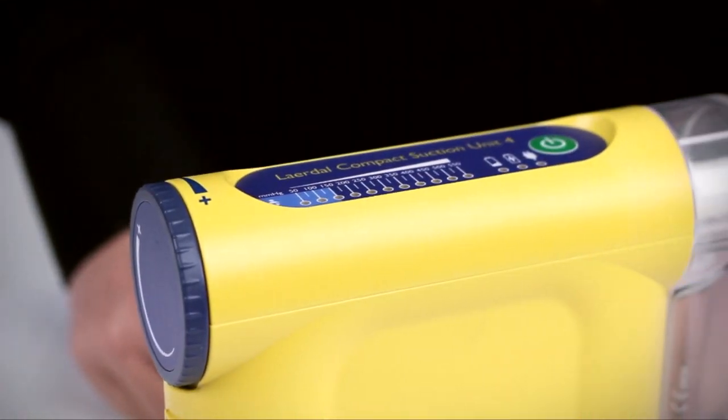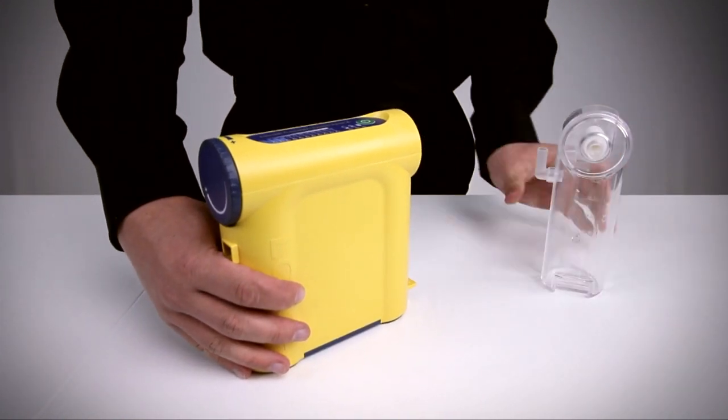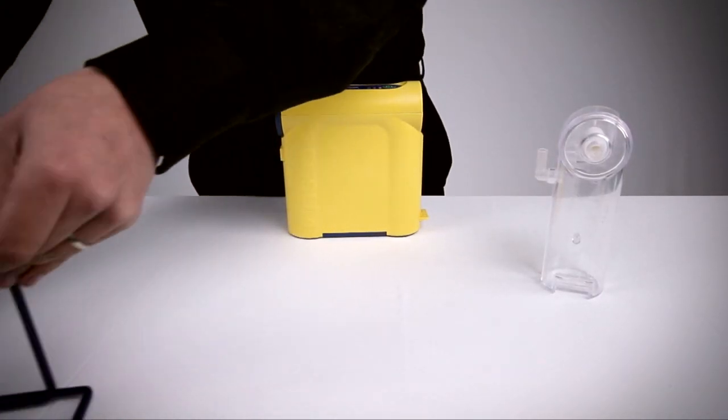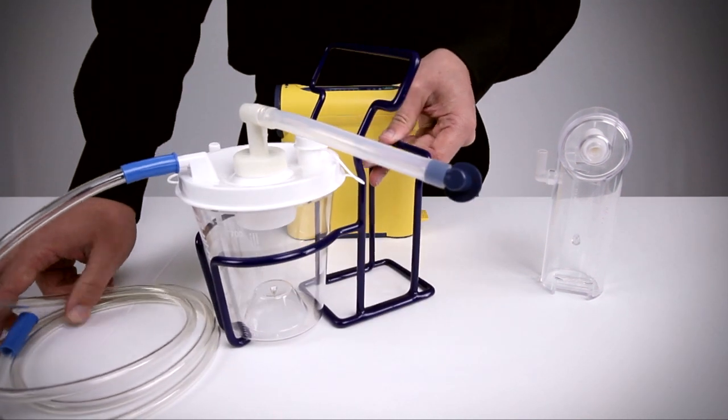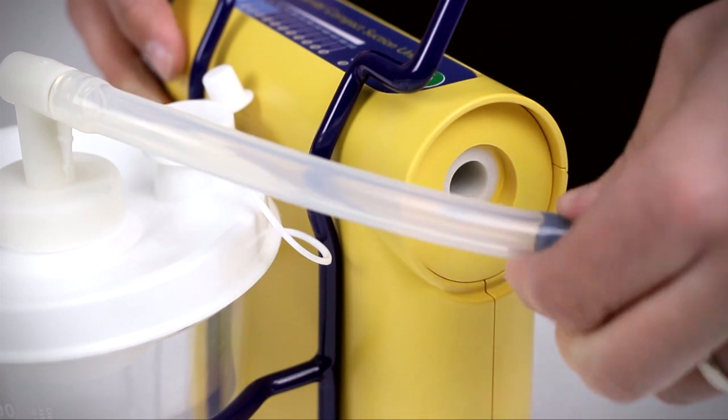The LCSU-4 comes with two disposable canister options, 300 and 800 milliliter. To convert the 300 milliliter version to the 800, disconnect the canister and replace it with the larger canister, attaching with the wire stand.